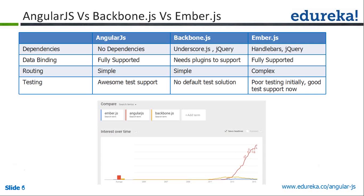Routing means navigating from one page to the next. For example, every website has tabs like Home, About, and Contact. To navigate between tabs, we use route parameters to load different views. That is really simple in AngularJS compared to Backbone and Ember.